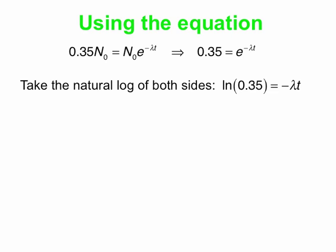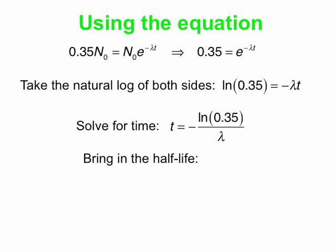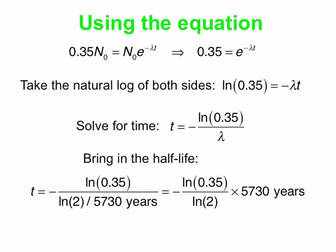Now, initially, this might worry you because you have a negative number on the right. Well, we actually have a negative number on the left as well. The natural log of any number less than 1 is negative. So that's going to cancel out the negative we have on the right-hand side. So we're going to solve for time. Just rearrange the equation: t is negative ln 0.35 over lambda, the decay constant. Now we'll bring in our half-life, our well-known half-life for carbon-14. And our lambda is natural log of 2 divided by the half-life. So we replace lambda in our equation by natural log of 2 divided by the half-life, which is 5,730 years. So we can rearrange that and bring the 5730 years up on top, and we get minus ln 0.35 over ln 2 times 5730 years.